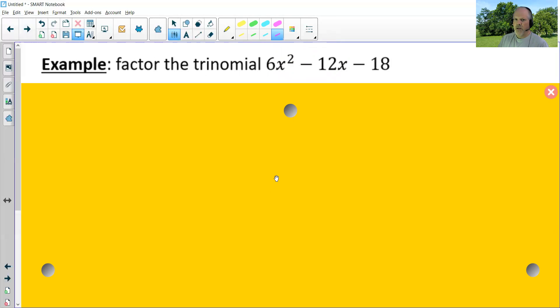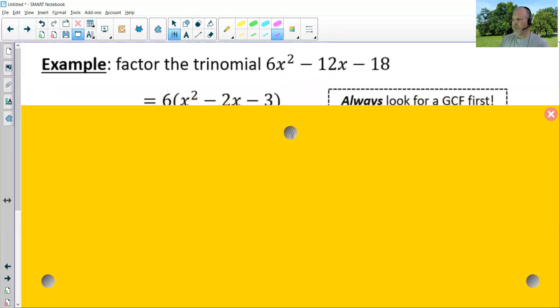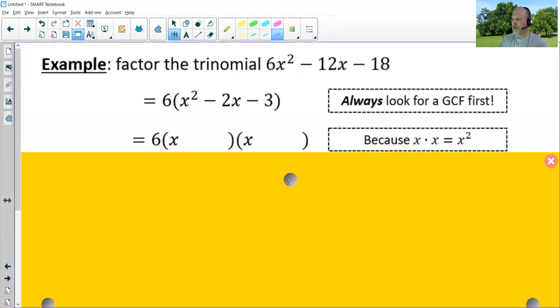Always remember when you're factoring, look for a GCF first. I have a GCF on this trinomial of six. So when I divide a six out, I end up with six times the quantity x squared minus two x minus three. Now we're going to draw our two binomials knowing that first times first must equal x squared. So we have x times x and I've left the last terms blank.